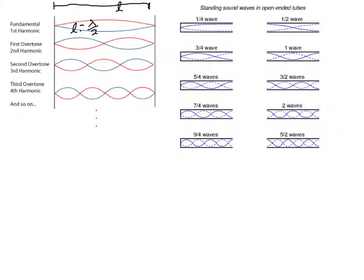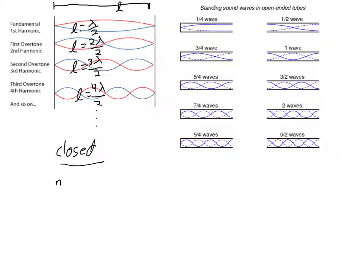The second harmonic — the next one up — is an entire wavelength: L equals 2·lambda/2, which is 1, because the wave goes up and comes back down and gets reflected. For the third harmonic, L equals 3·lambda/2. For the fourth harmonic, L equals 4·lambda/2. So for a closed-on-both-ends pipe or string, the equation is n·lambda/2 = L, where n is the harmonic number and must be a whole number — 1, 2, 3, 4, 5, and so on — because standing waves aren't set up at fractional harmonics.